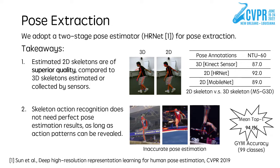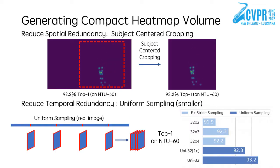Pose extraction is a critical step for skeleton action recognition, whose importance is often overlooked. We focus on 2D poses instead of 3D ones due to their superior quality, which is significant in qualitative and quantitative studies. Besides, we also find that action recognition doesn't need perfect pose estimation results as long as action patterns can be revealed. To restore coordinates to pseudo heatmaps, for each joint, we generate a Gaussian map centered at the joint location.